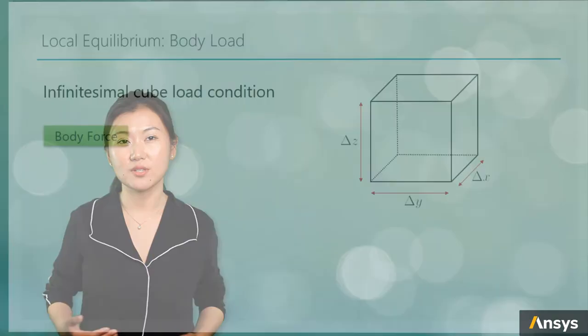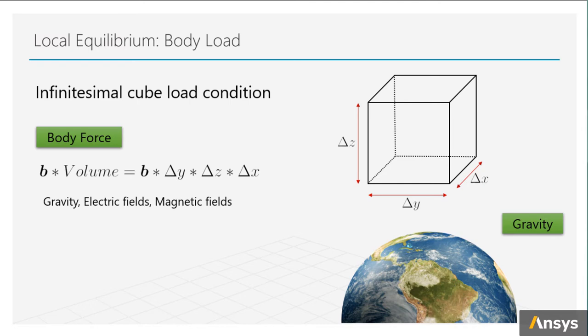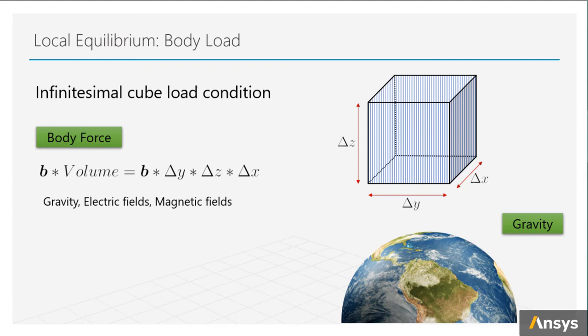Besides the surface load, the cube might also suffer from body force. For example, gravity, electric fields, or magnetic fields. Body force is proportional to the volume of the cube. If the body force density is denoted by b, the body force can be simply written as b times the volume of the cube.